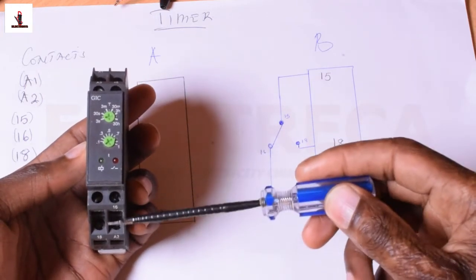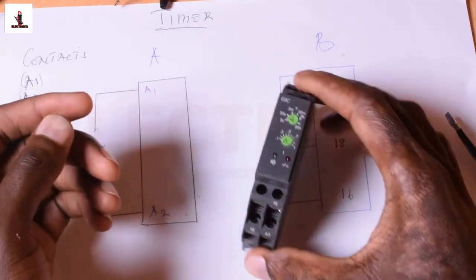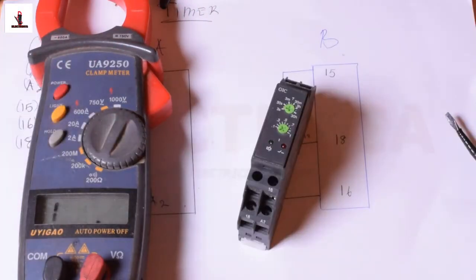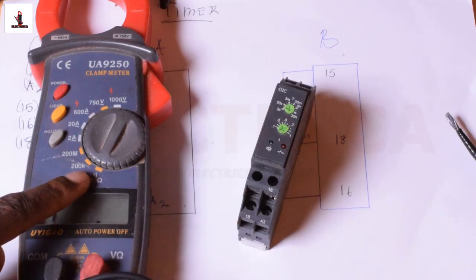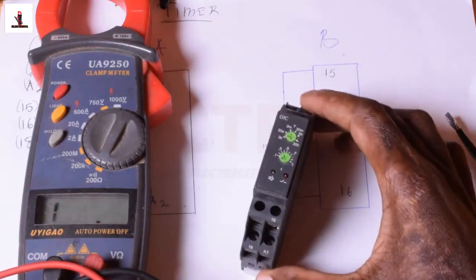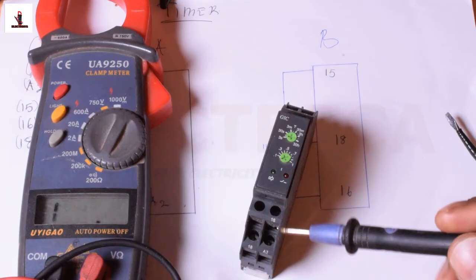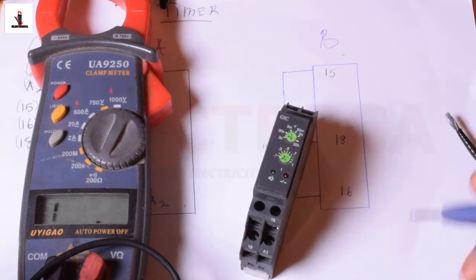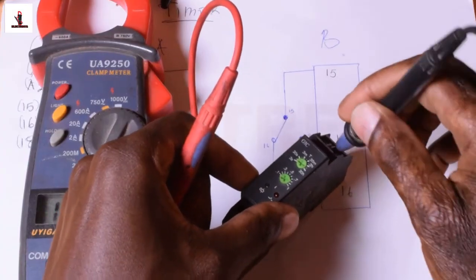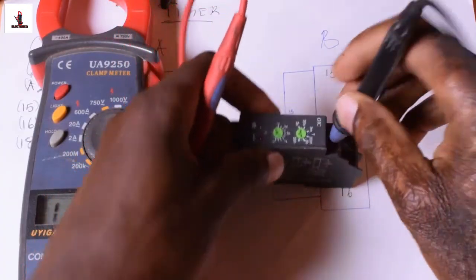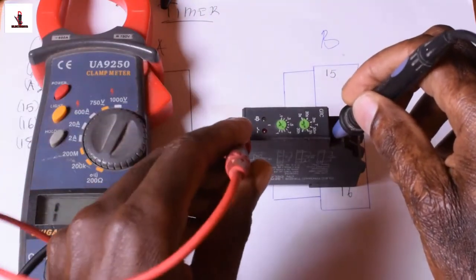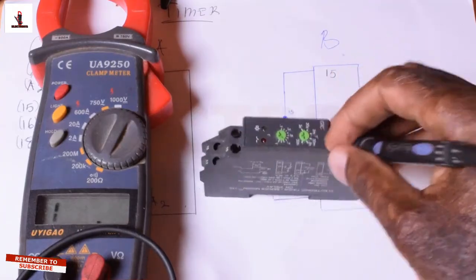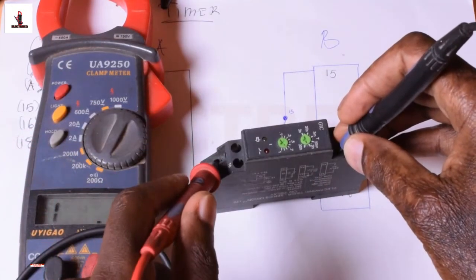Yes, so if you measure here—let's get our multimeter. Our multimeter is on and we'll leave our dial in continuity. So we've got 15, 16, and 18, and we say that 15 and 16 are closed. So we will have to put this on 15 and 16. So 15 and 16 are closed, and then 15 and 18 are open.